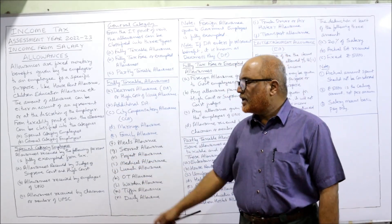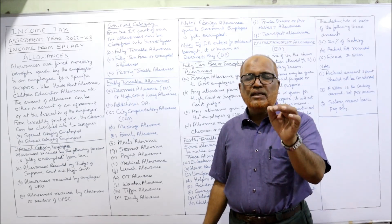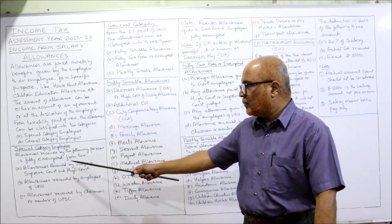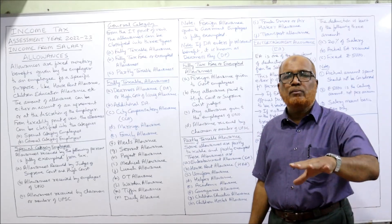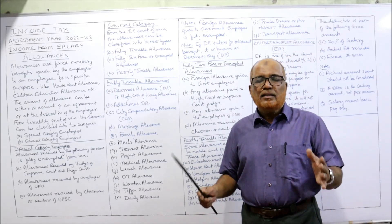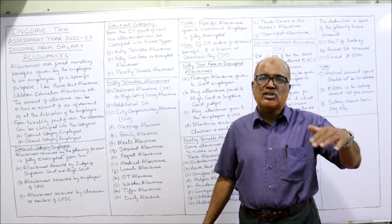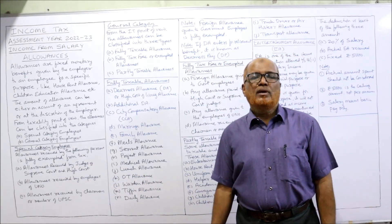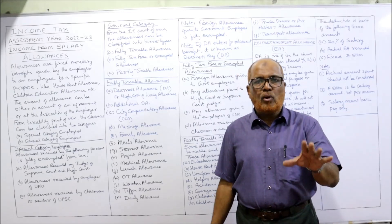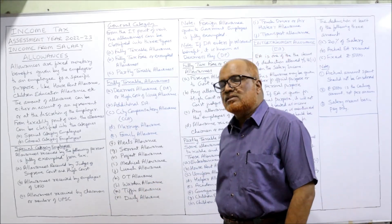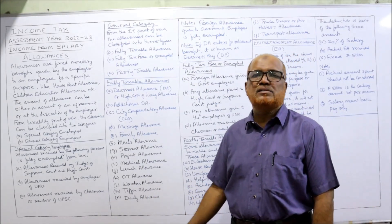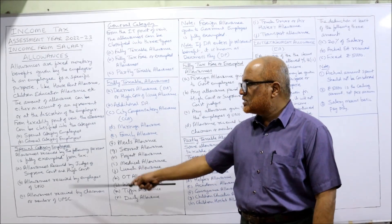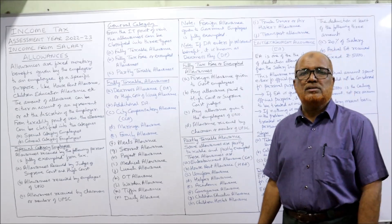Special category employees are those in whose hands the allowances are completely exempted. These include: allowances received by judges of the Supreme Court and High Court in India — fully exempted; allowances received by employees of UNO (United Nations Organization) — fully exempted; and allowances received by the chairman or members of UPSC (Union Public Service Commission) — fully exempted. These three are the special category employees.